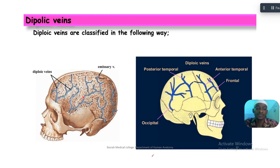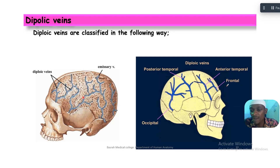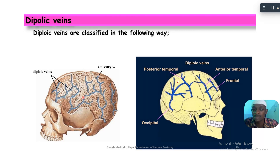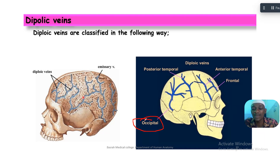The diploic veins are classified using FAPU: the frontal diploic veins, the anterior temporal diploic veins, the posterior temporal diploic veins, and the occipital diploic veins.